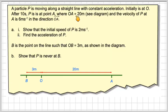A particle P is moving along a straight line with constant acceleration, initially at O. After 10 seconds, P is at the point A, where OA is 20 metres, see the diagram, and the velocity of P at A is 6 metres per second in the direction OA.